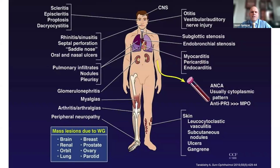This slide summarizes some of the manifestations of GPA. As you can see, it can affect almost any organ system. It can affect the eyes, and some symptoms include eye redness, eye pain, or sudden vision loss. Sometimes it can affect the sinuses, causing inflammation or sinusitis. It can sometimes affect the shape of the nose, causing what's called the saddle nose. It can cause mouth or nose ulcers. It can affect the lungs, sometimes presenting as inflammatory nodules, or sometimes very dramatically with bleeding in the lungs.